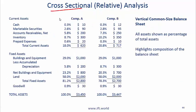Next we look at cross-sectional analysis. With cross-sectional analysis, you are comparing companies at the same point in time. For example, comparing company A with company B — they may have the same amount of cash relative to total assets, but company B has a higher percentage of accounts receivable relative to total assets. With time series or trend analysis, we look at what is happening to a particular company over a period of time.